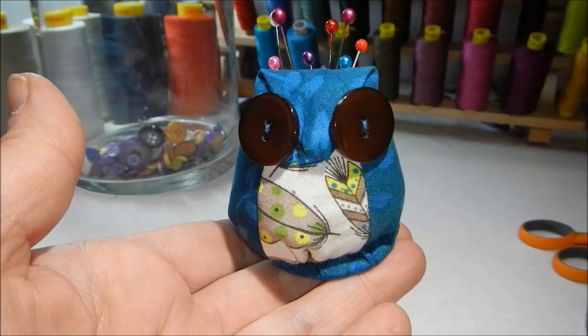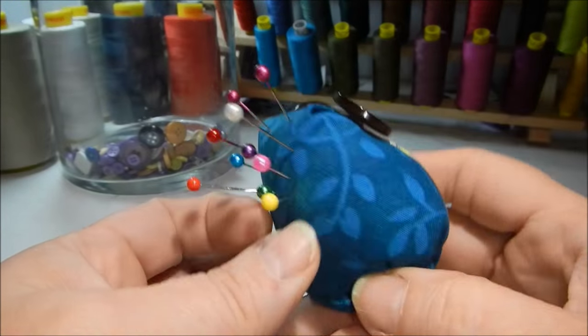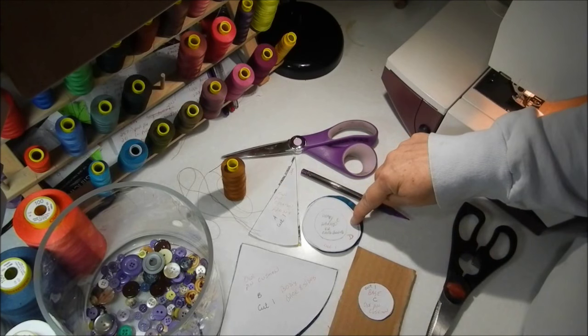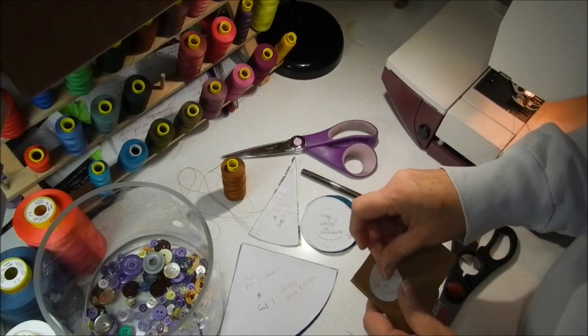For my fun project number four, we're going to make this cute little owl pincushion. So we have the body, the front, the cover to the base, and a piece of cardboard that I'm going to cut the base out of.